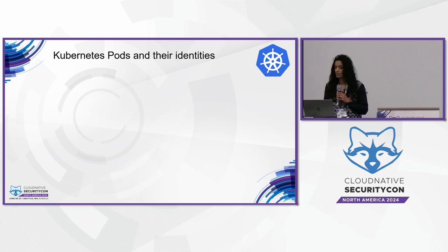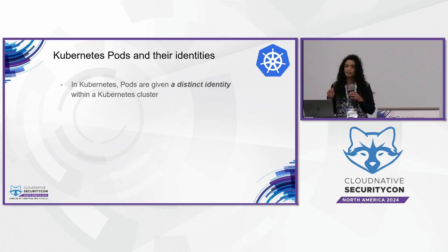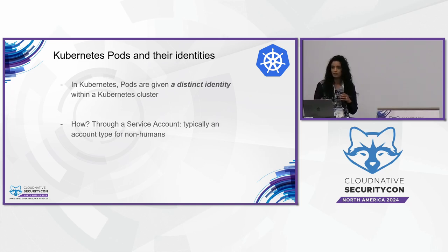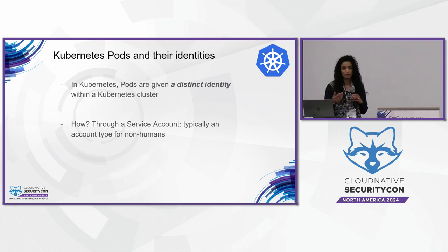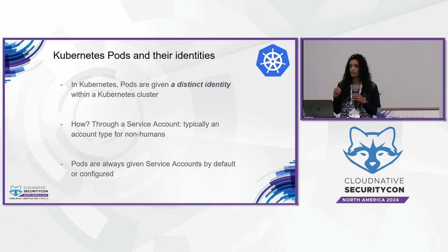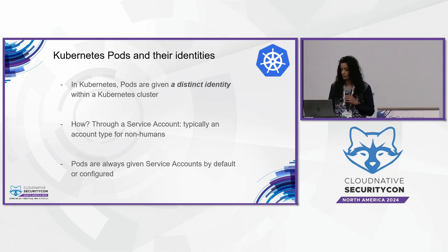A little fundamentals: Kubernetes, pods, and their identities. How are they getting them? In Kubernetes, pods are given a distinct identity within the cluster. How are these assigned? Basically, through service accounts. That's useful for these non-human workloads, like pods and VMs. In Kubernetes, pods are always assigned a service account, whether it be the default service account or something that you configure and assign to the pod.